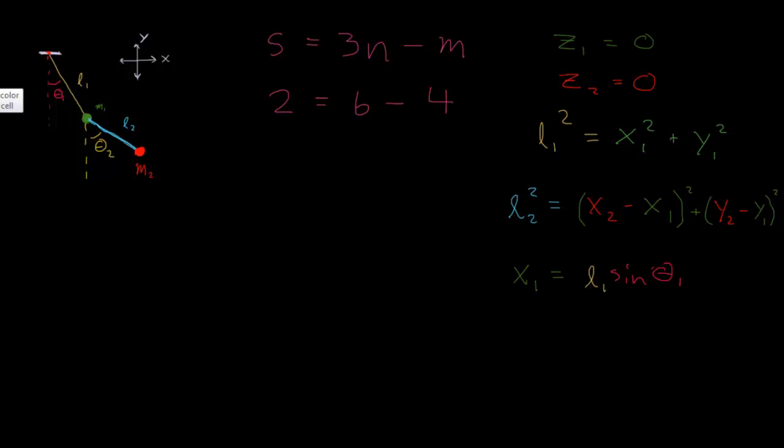Now similarly for y, we can write that y one equals L1 times the cosine of theta one. If we have this right triangle, we can see that this is the adjacent side, and actually there should be a negative sign here because we're counting up as positive and the pendulum is below the origin when theta is zero.